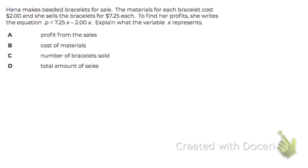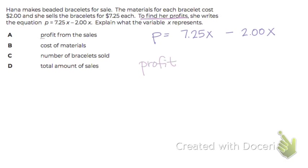Let's take a closer look at the equation. What is this equation calculating? It says to find her profit, she writes this equation, so this equation must calculate her profit. That must be what P represents — profit. So we know the answer is not A. Profit represents P, not X.